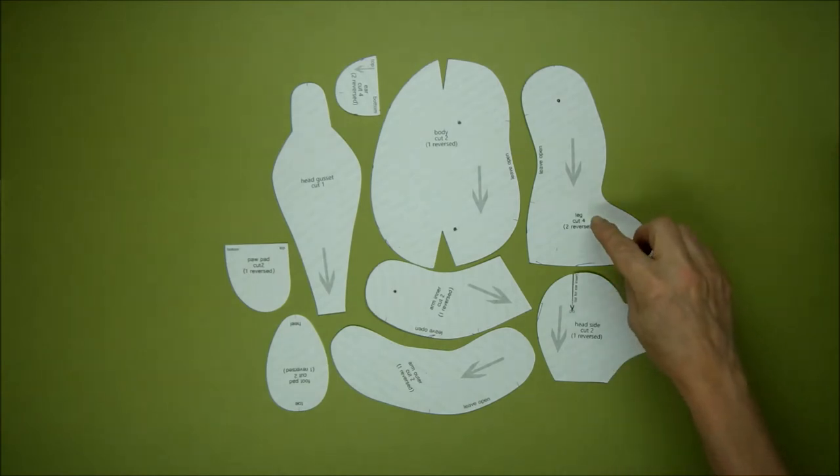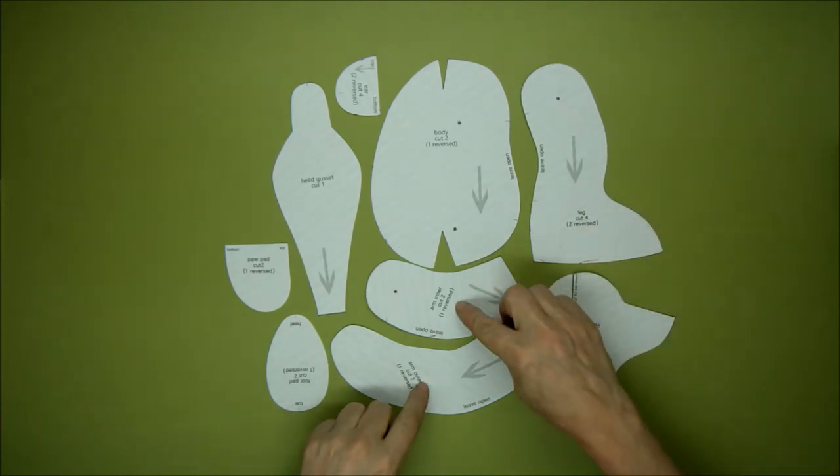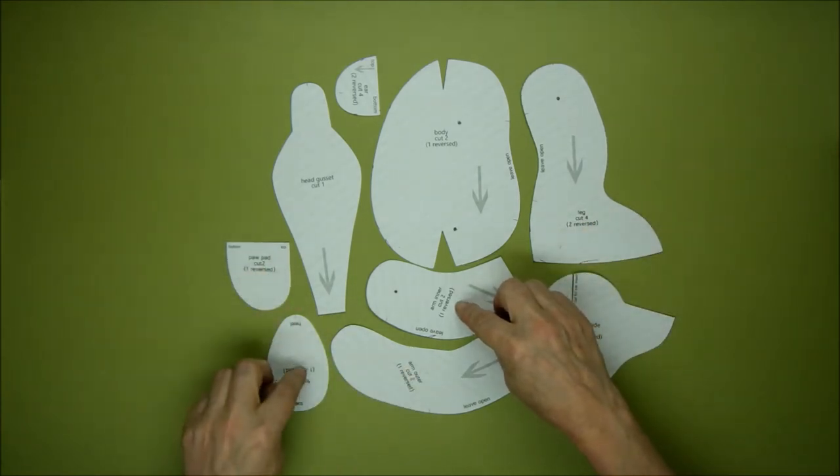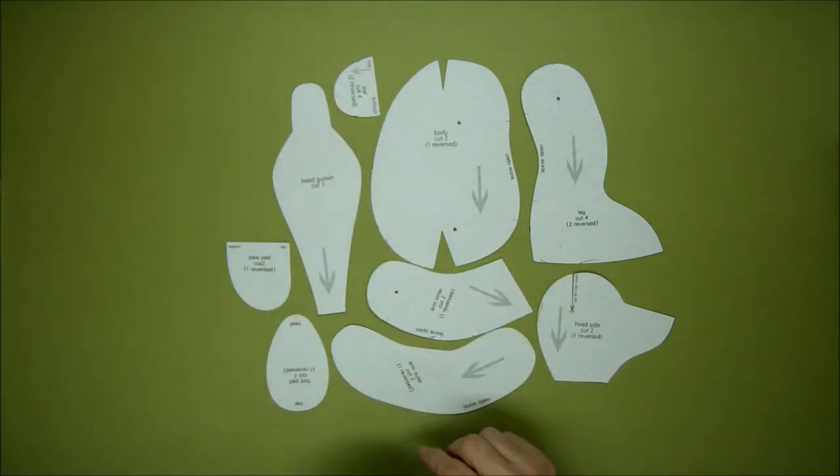We have the leg, the inner and outer arms, the paw pads, the ear, and the body.